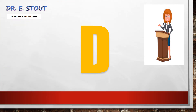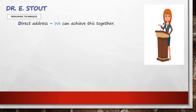Here's our first letter: D. The D stands for direct address. The easy way to remember this is that you're directly speaking to the person, so we use what we call personal pronouns — like 'we', 'us', 'our'. Anything that makes it sound like you're having a conversation with the person reading your text. This makes it feel a lot more personal and therefore makes them more likely to agree with you. The example we've got here is: 'We can achieve this together.' Why don't you see if you can write a line of direct address.